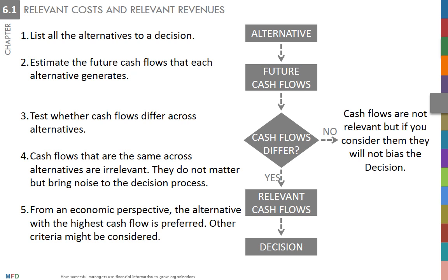For short-term decisions, it is wise to question the full cost information, since it reports the cost of all resources that go into producing and selling a product when not all these resources are relevant. That being said, full cost information is useful when assessing the long-term profitability of products. In fact, a decision that has long-term implications may find all costs useful.